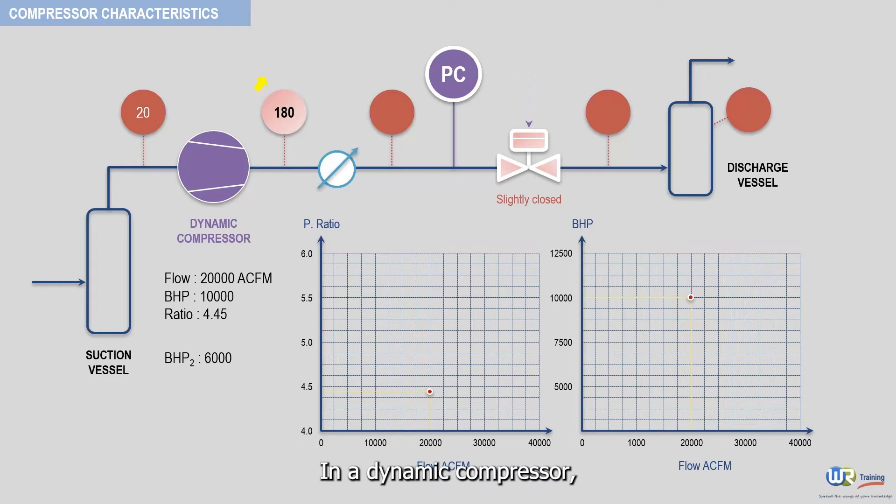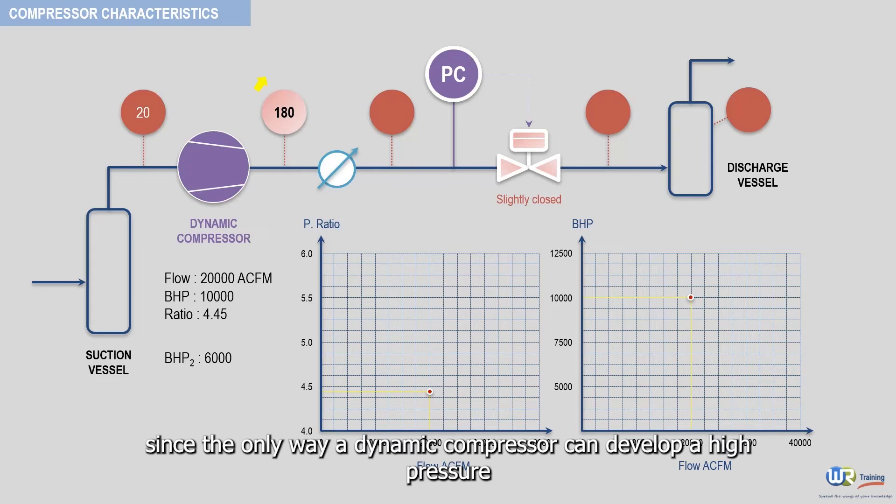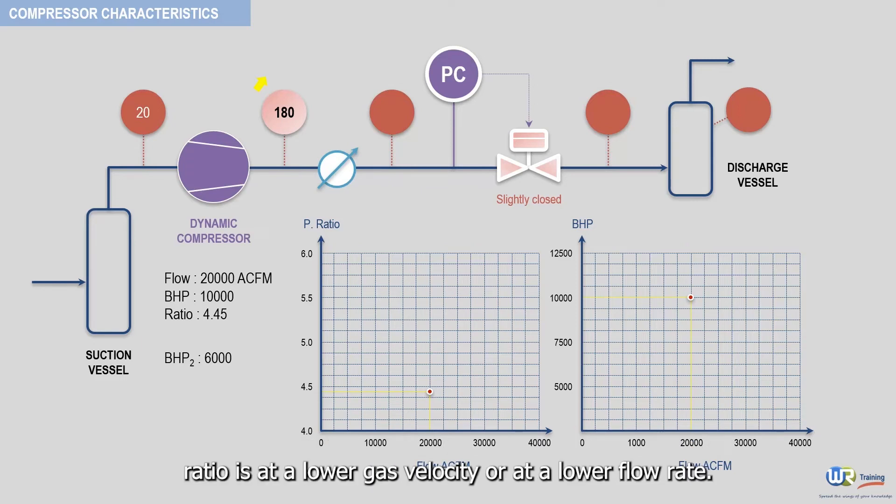In a dynamic compressor, increasing the pressure ratio would result in a lower compressor flow rate, since the only way a dynamic compressor can develop a high pressure ratio is at a lower gas velocity or at a lower flow rate.